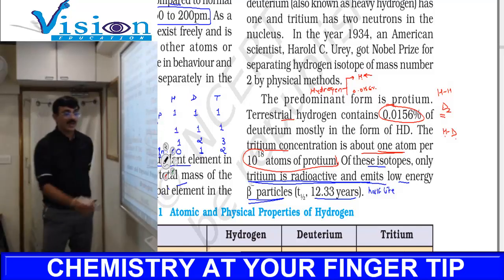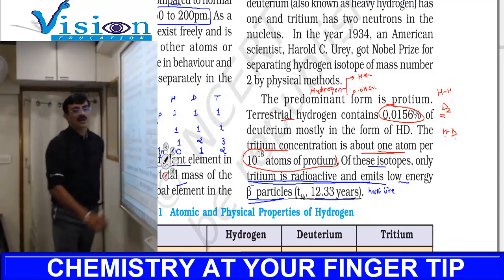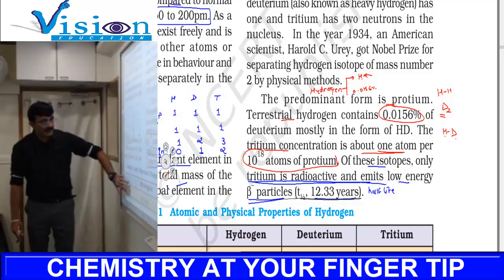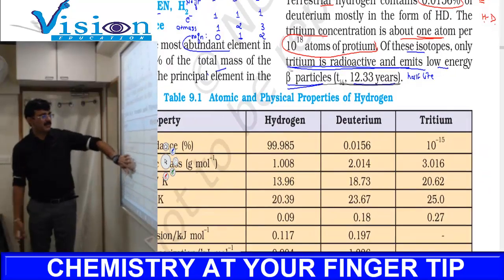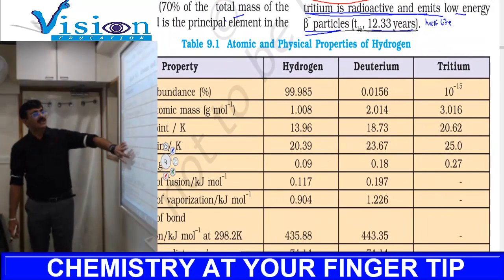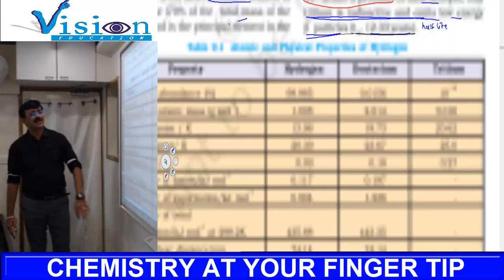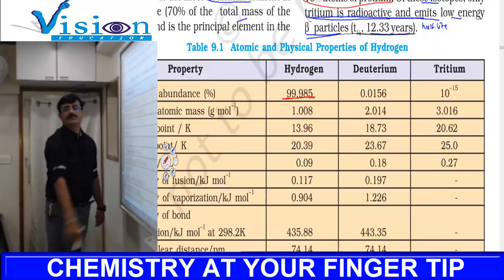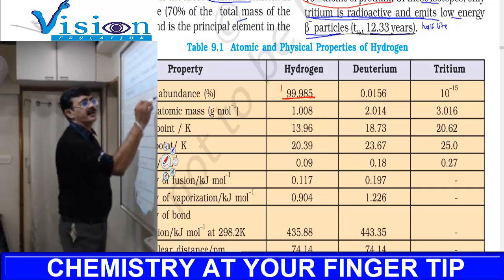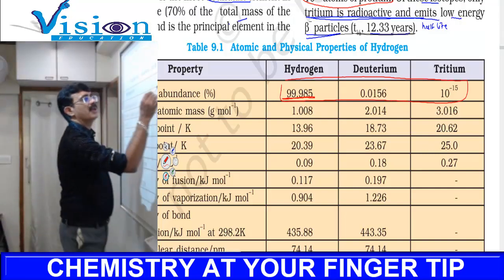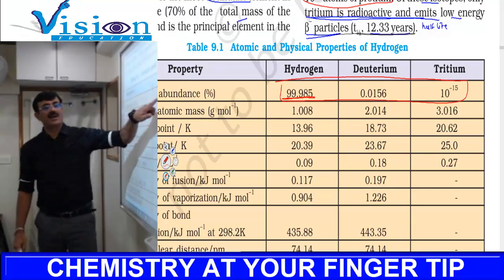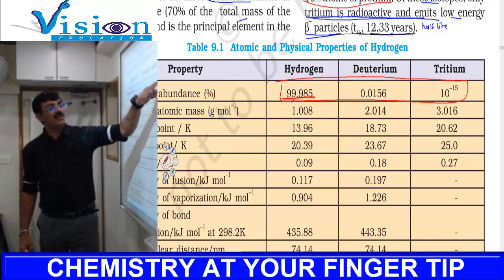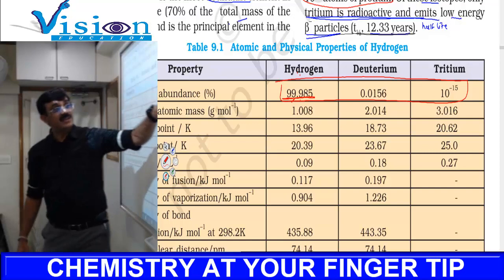You should underline this when studying radioactive decay. Now a table is given here for atomic and physical properties of isotopes. If a pregnant person has hydrogen, 99.99% is protium and 0.0156% is deuterium.